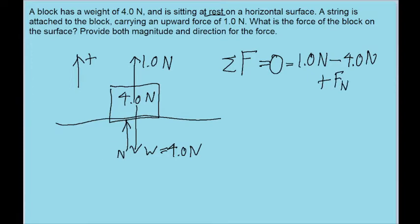We don't know what the normal force is. We can find it using this force equation. If we condense this equation a bit, 1.0 newtons minus 4.0 newtons, that becomes negative 3.0 newtons plus the normal force, F sub n. And then adding both sides by 3.0 newtons to solve for the normal force, we find that the normal force of the surface on the block is 3.0 newtons.